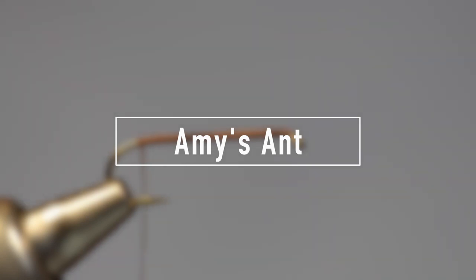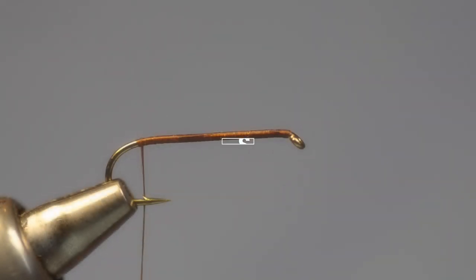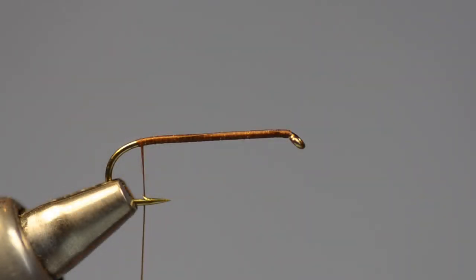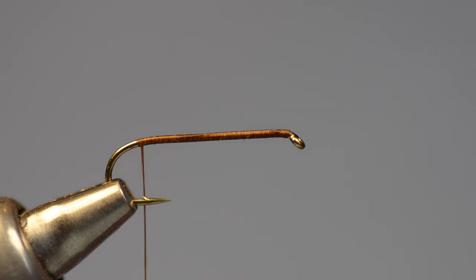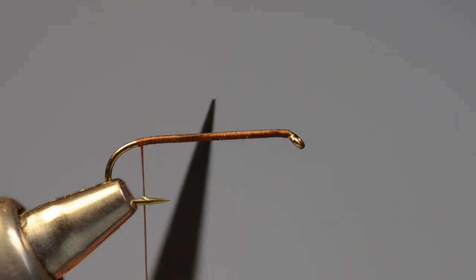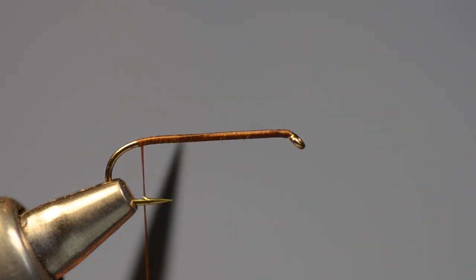Let's tie this Amy's Ant. What I've got in the vise here is a TMCO 5262. That's a two extra long nymph hook. And I've dressed the shank with 6-aught uni in dark brown for the thread. And I want to make sure that I've got a good solid thread base here from the eye all the way back to the bend so that when I tie my foam down everything will anchor in place. We're also going to glue it down so having a little texture there on the hook shank won't hurt.